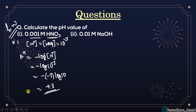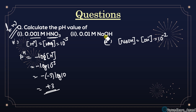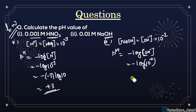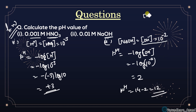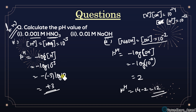For the second part - a strong base - whatever the concentration is, that will be the same concentration for OH⁻, which is 10⁻². Since OH⁻ concentration is given, you cannot find pH directly. First find pOH = -log[OH⁻] = -log(10⁻²) = 2. Then pH = 14 - 2 = 12. Alternatively, use [H⁺][OH⁻] = 10⁻¹⁴ to get [H⁺] = 10⁻¹², giving pH = 12.